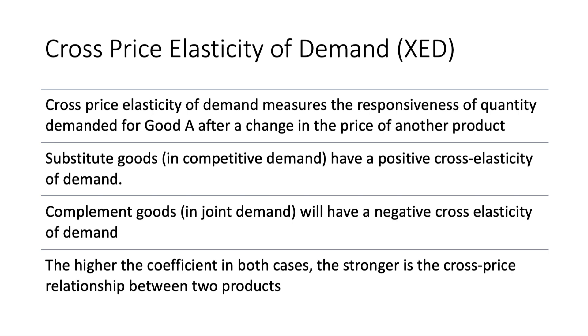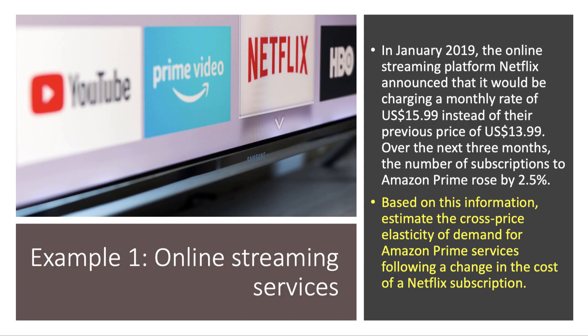Let's take a look at three examples of calculations of the type you might be asked to make. The first example is in the market — the increasingly contestable market for online streaming. Earlier on in 2019, the online platform Netflix announced that the monthly rate in the States would be going up to $15.99 instead of $13.99. And over the next three months, the number of subscriptions to Amazon Prime rose by 2.5%.